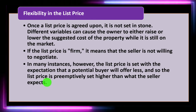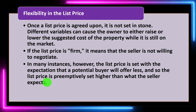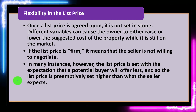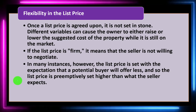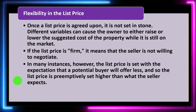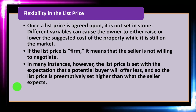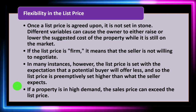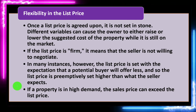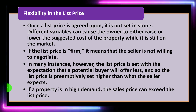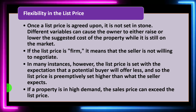In many instances, the list price is set with the expectation that a potential buyer will offer less, so the list price is preemptively set higher than what the seller expects to receive. If you're expecting a counter offer, you're going to set the price high, they'll come back low, and then the negotiation begins. You typically want to start at a high bar if that's the method, and the real estate broker can help with that process. If a property is in high demand, the sales price can actually exceed the list price.